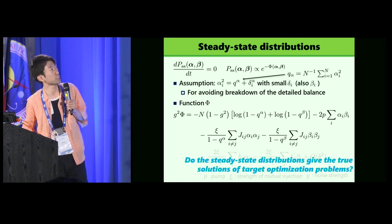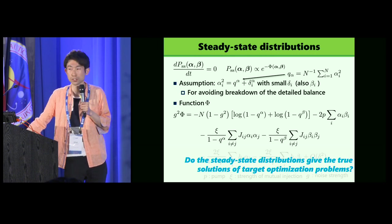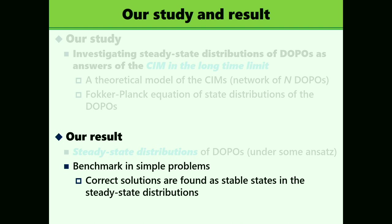So the next question is that, do the steady-state distribution here give the true solution of target optimization problems by tuning the parameters P and C? So to show that, I explain benchmarking simple problems and incorrect solutions that are obtained.